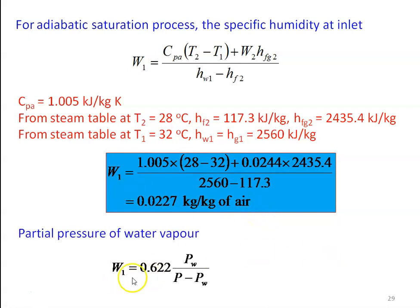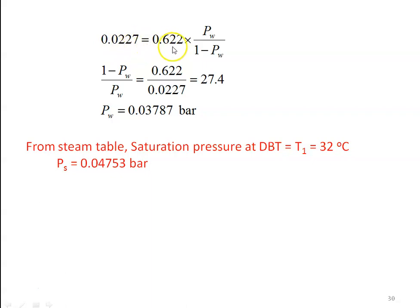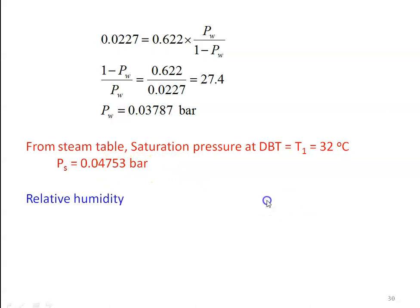W1 is also given by 0.622 × Pw / (P − Pw). Using this equation we can calculate the partial pressure of water vapour. Substituting: 0.0227 = 0.622 × Pw / (1 − Pw). Rearranging: (1 − Pw) / Pw = 0.622 / 0.0227 = 27.4. Solving, Pw = 0.03787 bar. Saturation pressure at DBT = 32 degree Celsius from steam tables: Ps = 0.04753 bar. Relative humidity φ = Pw / Ps = 0.03787 / 0.04753 = 0.796, which is 79.6 percent.